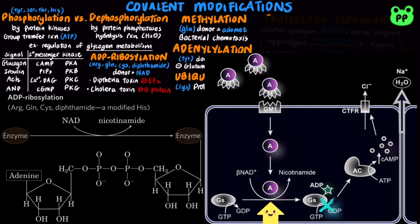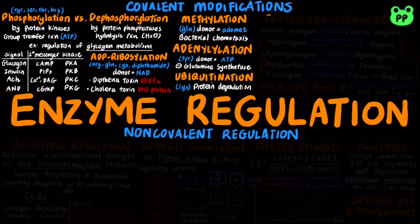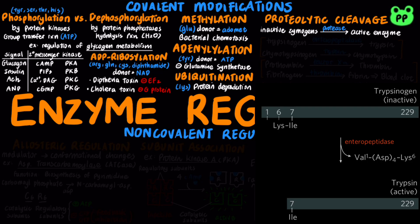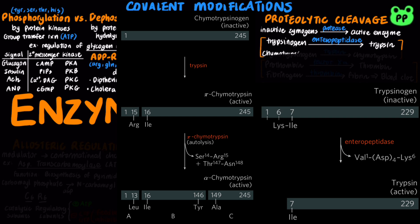Many enzymes are secreted in inactive forms known as zymogens and are cleaved by specific proteases to the active enzyme. For example, in the intestine, enteropeptidase cleaves the inactive trypsinogen into trypsin, which in turn cleaves the inactive enzyme chymotrypsinogen into chymotrypsin. Both trypsin and chymotrypsin are key proteases that help digest proteins.